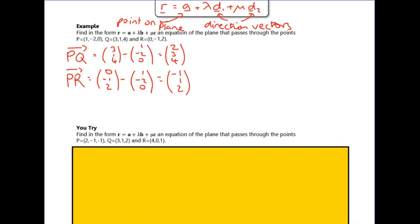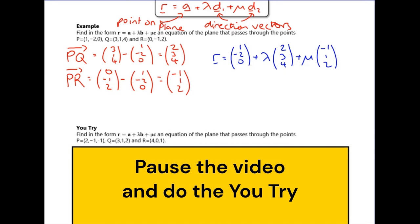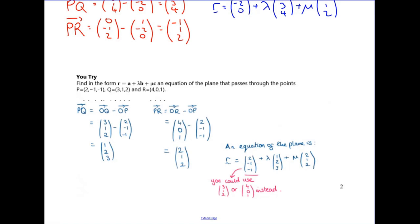These are two direction vectors that lie in the plane, so I can write down the equation: r equals a point it goes through — say (1,−2,0) — plus lambda times direction vector (2,3,4), plus mu times the other direction vector. There are multiple valid answers: you could use any of the three points and any two direction vectors such as PQ, PR, or QR. It's not a unique answer.